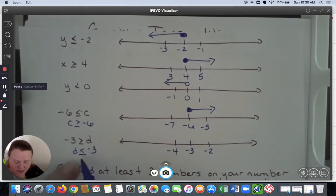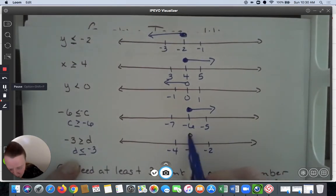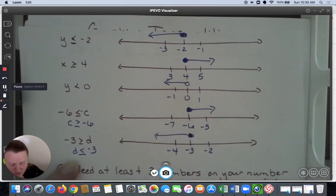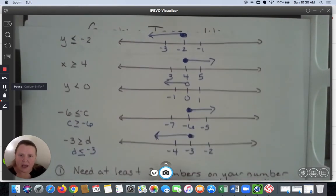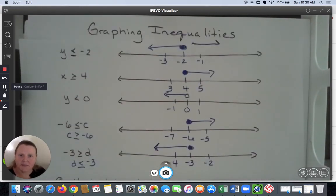So now I have d ≤ -3. I'm going to do a closed circle and point to numbers on the smaller side or the less than symbol. That's a quick overview of how to graph inequalities. Thanks!